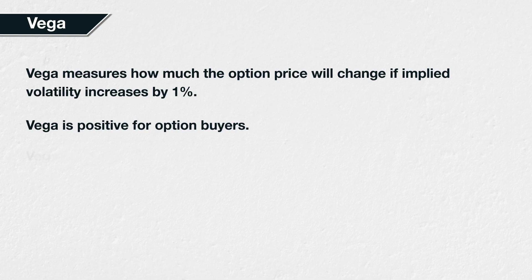For option sellers, their Vega is negative. An increase in implied volatility will mean an increase in the value of the option, but for the seller of the option, this represents a loss. Similarly, a decrease in implied volatility will lead to a decrease in the value of the option, which for the seller of the option represents a profit. Option sellers, therefore, are short volatility.